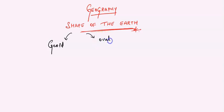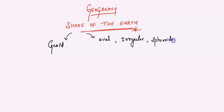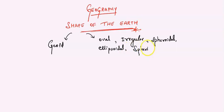Maybe some may say oval, or some may say earth has an irregular shape. Some may say earth has a spheroidal shape, or others may say earth has an ellipsoidal shape. Or spherical shape — earth is having a spherical shape. Any other? Oblate — very good. They may say oblate shape. So like this, we can define the shape of the earth in so many different forms as per the requirement.